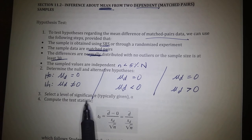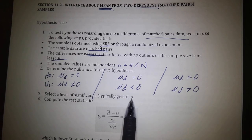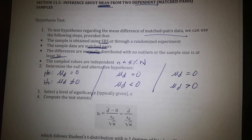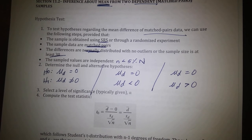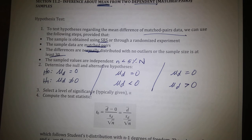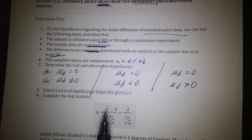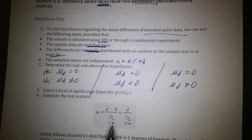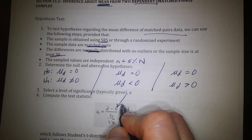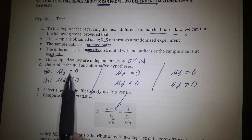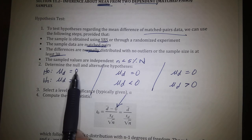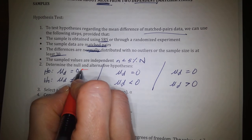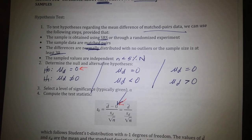We select a level of significance — typically given, usually 0.05. Then we compute the test statistic. D is the difference between the first value and the second value. For example, if I went on a diet and lost 12 pounds, 12 would be my difference. D-bar is the average of all people in the sample's weight loss. The formula uses the standard deviation of the sample and the square root of the sample size. The value subtracted is always 0 — that's the expected average difference. For this course, we won't do cases where that number is anything besides 0.